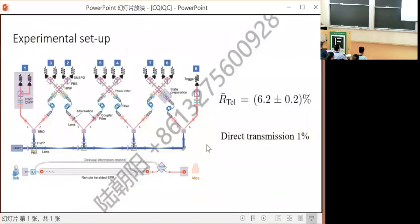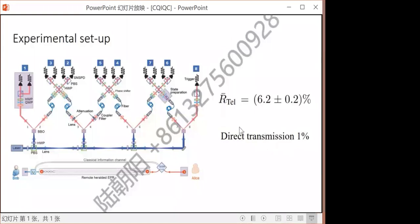Combine all these together. Recently, we have performed such teleportation experiments. You can see the setup here. The final teleportation efficiency, without subtracting any experimental loss and imperfections, is about 6.2 percent, which is six times higher than 1 percent by direct transmission.